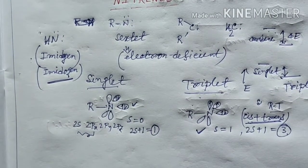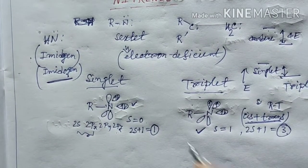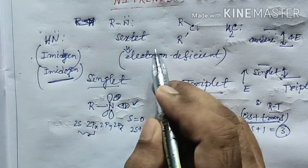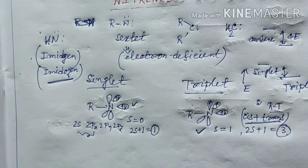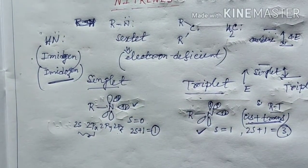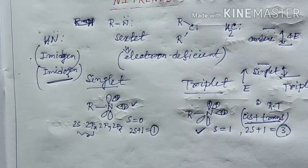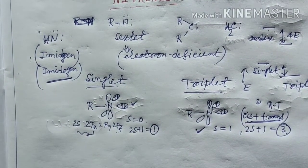Like carbene, singlet and triplet nitrene can be characterized by EPR spectroscopy — triplet nitrene gives a signal in EPR, but singlet nitrene is silent (EPR inactive).